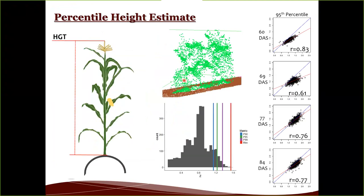When we extract plant material from the point cloud, we get a distribution of points per plot and take percentiles from that distribution to estimate height. For example, the 90th percentile is shown in blue, 95th in green, 99th and max in red. We're getting fairly high correlations between manual and estimated height values using this approach.